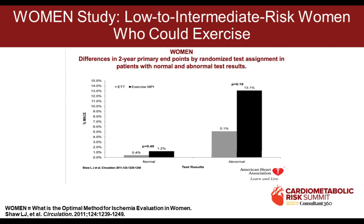The women's study showed we always thought stress tests were inaccurate in women because estrogen mimicked digitalis and women may have poor exercise capacity. But in women who are low to intermediate risk who can exercise, there's no difference in risk stratification between exercise myocardial perfusion scan and exercise stress testing. A normal test has a very low risk, and an abnormal test may have an increased risk, though the difference is not statistically significant.